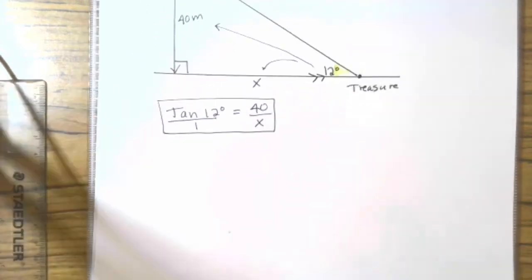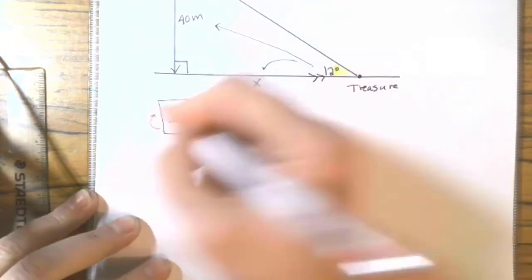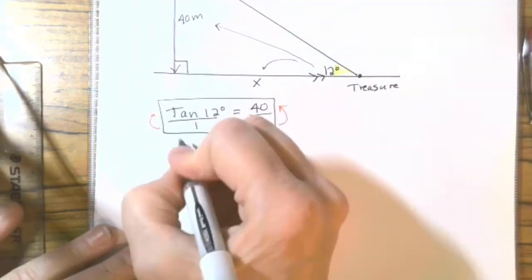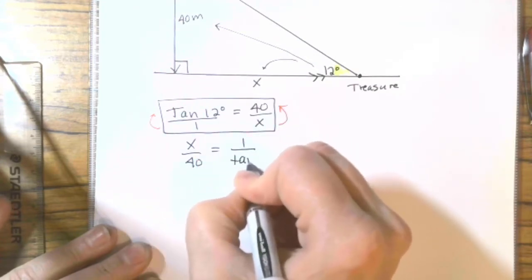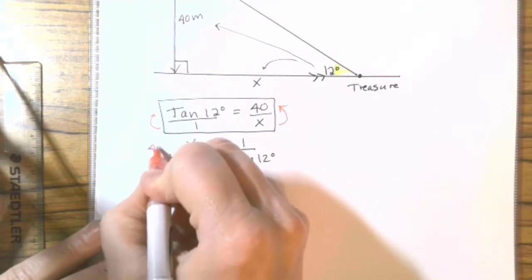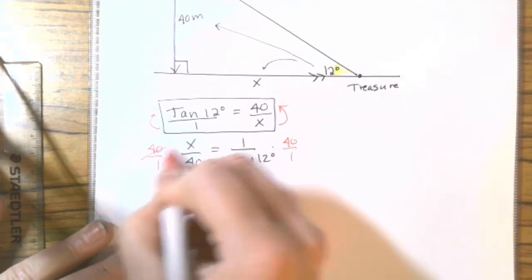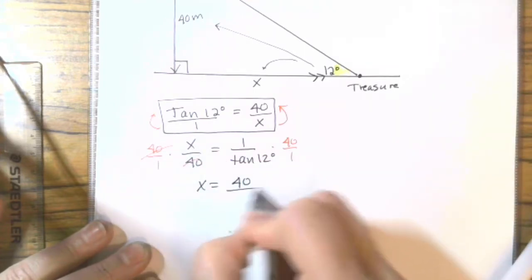So, now we need 12 degrees is not a memorized angle. So, we're going to need to solve for X and then put it into our calculator. So, to get X to the top, flippy step is probably a good choice. So, X over 40 equals 1 over tangent of 12 degrees. Then, I need to get X alone. So, multiply by 40 over 1 on both sides. So, X equals 40 over tangent of 12 degrees.